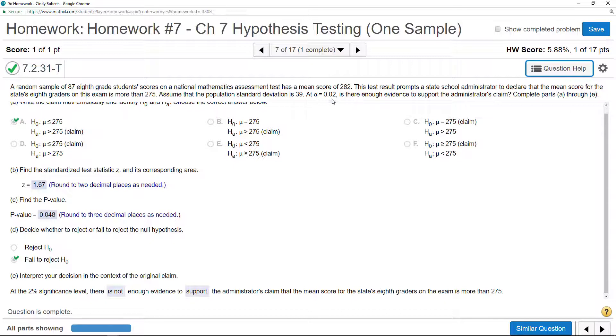So, in other words, at this 2% significance level, there is not enough evidence to support their claim that the scores are higher. We fail, based on this data, we fail to reject.